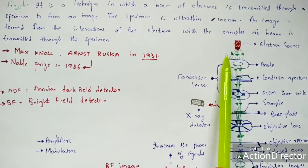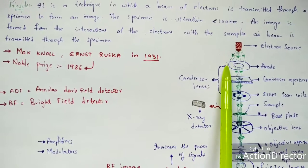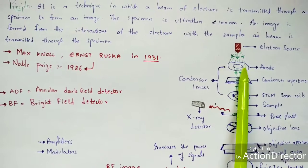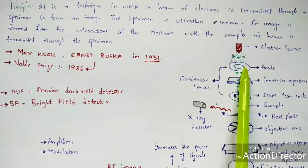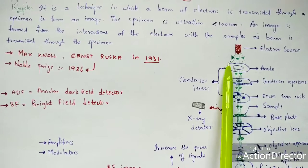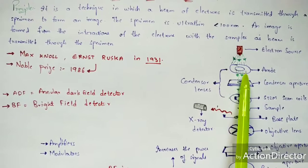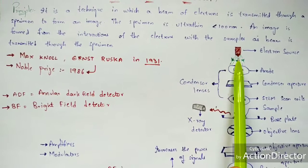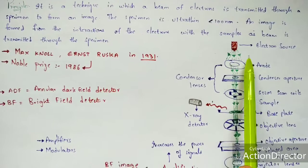The electron beam falls upon the anode. The anode is a disc-like structure where the surrounding region is closed, stopping the flow of electrons. The open region in the middle allows the electrons to pass through to another part of the electron microscope.